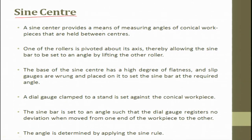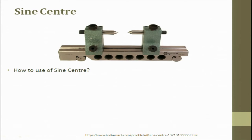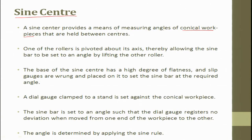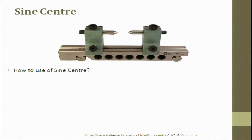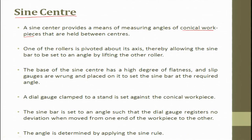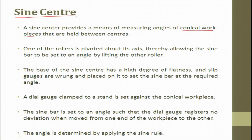A sine center provides a means of measuring the angle of conical work pieces held between centers — there are two dead centers or a live and dead center combination. One of the rollers is pivoted about its axis, allowing the sine bar to be set at an angle by lifting the other roller. The base of the sine center has a high degree of flatness. The slip gauges are wrung and placed to set the sine bar at the required angle.